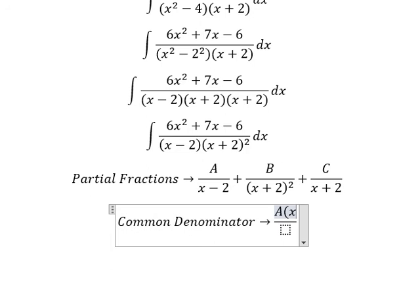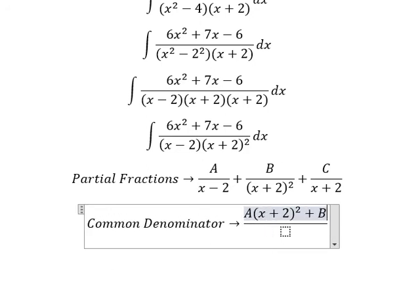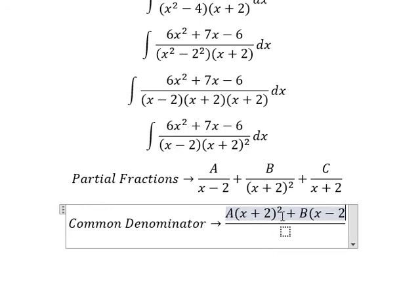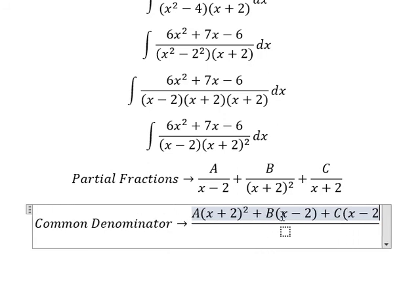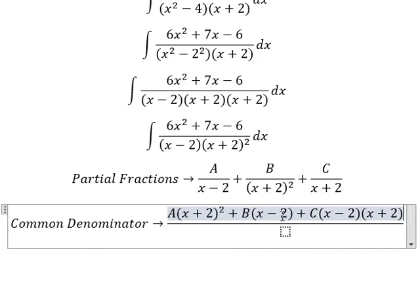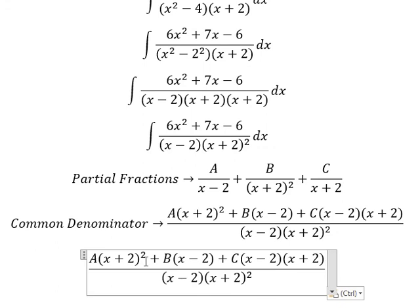Next we find the common denominator. So capital A multiplied by (x+2) squared, capital B multiplied by (x-2), and capital C multiplied by (x-2) multiplied by (x+2). Now we need to expand this.